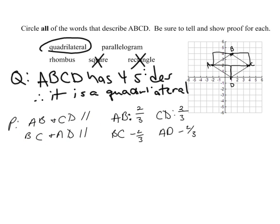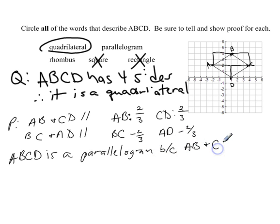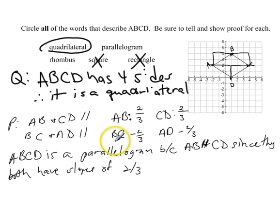Then we need to make a statement showing what we proved. Once we've proven this, we need to make a statement. So we say ABCD is a parallelogram because AB is parallel to CD since they both have slopes of 2 thirds. And then you would say the same thing. Also BC is parallel to AD because they both have slopes of negative 2 thirds, and you'd want to be sure and state both of those things. I'm going to erase this so we have space to prove that it's a rhombus.